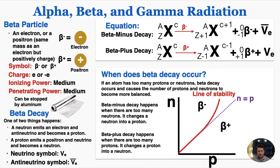A beta particle is an electron or a positron, which is an antimatter particle that has the same mass as an electron but positively charged. Technically the mass is negative because it's antimatter — we'll talk about that more in a little while. The symbol is the Greek letter beta, which looks a lot like a b with a long tail, and then a minus or a plus sign next to it to symbolize the charge, whether it's an electron or a positron. Beta particles have medium ionizing power, so they're not quite as dangerous as alpha particles to humans, but they also have more penetrating power. They can be stopped by something like aluminum.